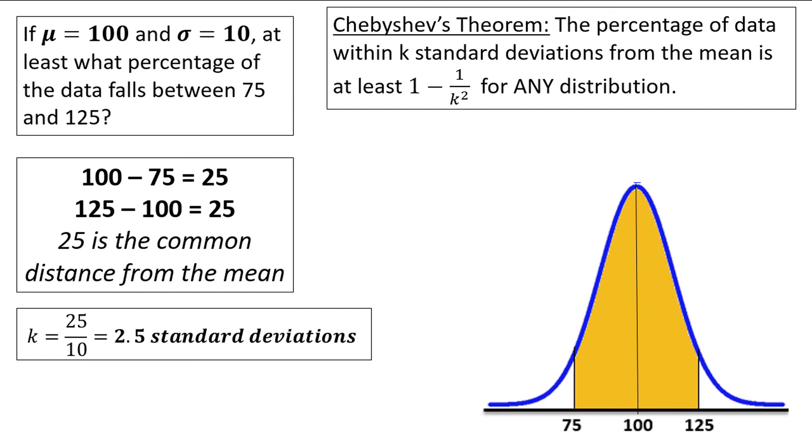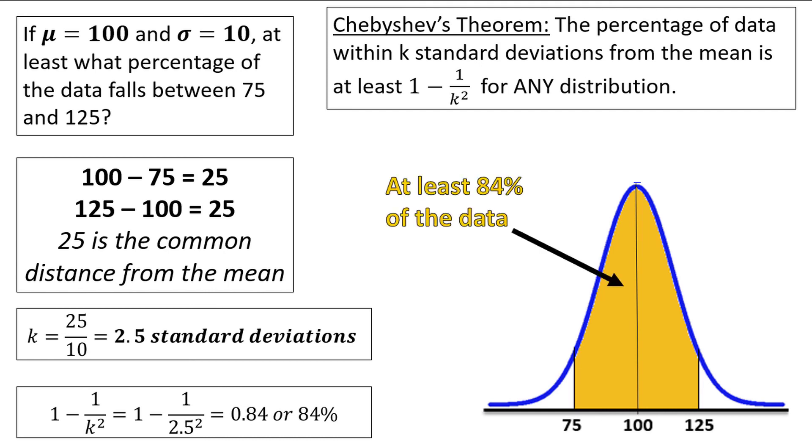Plugging into the formula, we have 1 minus 1 divided by 2.5 squared, which is equal to 0.84, or 84%. So at least 84% of the data falls between 75 and 125.